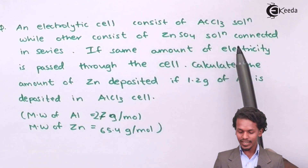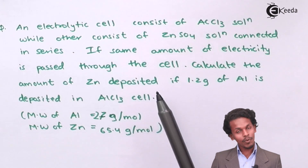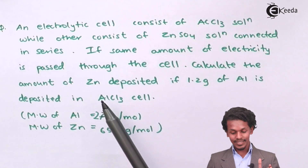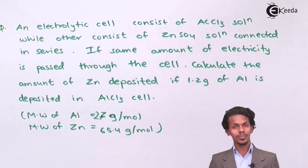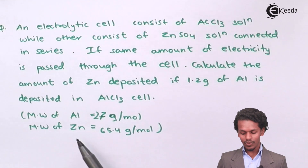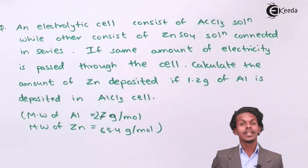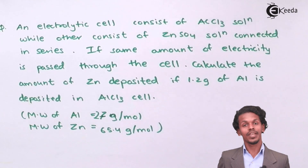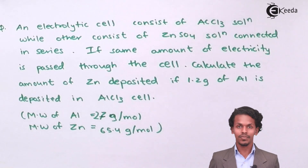If the same amount of electricity is passed through the cell, we need to calculate the amount of zinc deposited if 1.2 gram of aluminium is deposited in the cell of AlCl3. The data provided includes the molecular weight of aluminium and the molecular weight of zinc. Let us first extract the data present in the given question before solving further.